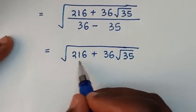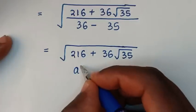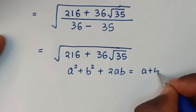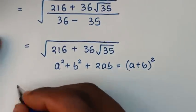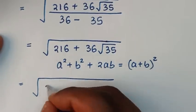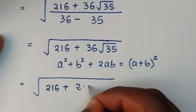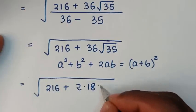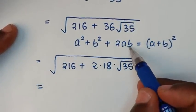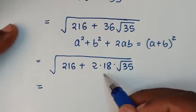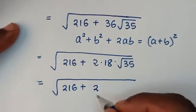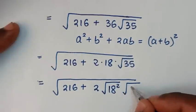Then in the next step, from here under the square root we will express in the form of a squared plus b squared plus 2ab, which is equal to a plus b bracket squared. It will be equal to square root of this form. So 216 plus 36 is the same as 2 times 18 because of the 2ab term. So b is square root of 35, giving 2 times 18 times square root of 35.